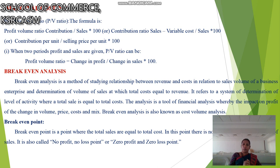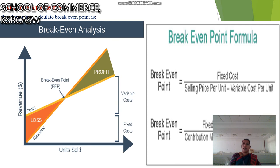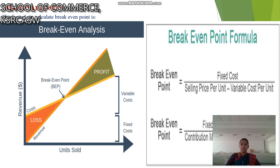What is the break even point? The break even point is the point where total sales are equal to total cost. This point represents no profit, no loss — or zero profit, zero loss. The break even point formula is: fixed cost divided by selling price per unit minus variable cost per unit. The center point on the break even analysis chart is called the break even point.